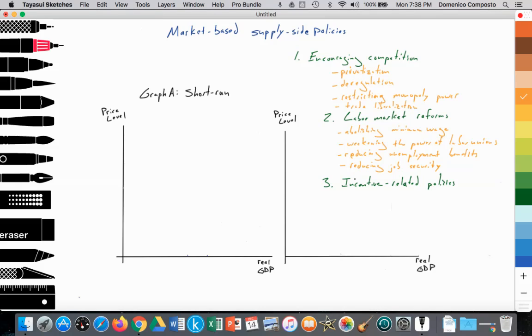Supply-side interventionist and incentive-related policies looks at, perhaps, lowering, as I mentioned before, lowering income tax, so households are incentivized to work more because they can keep more of their income. Lowering corporate taxes, perhaps even lowering capital gains tax. So overall, we can see that some of these might be unpopular with the majority of people in a population. And as a result, Margaret Thatcher faced a tough crowd as she tried to implement these policies.